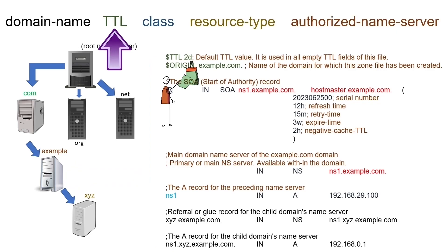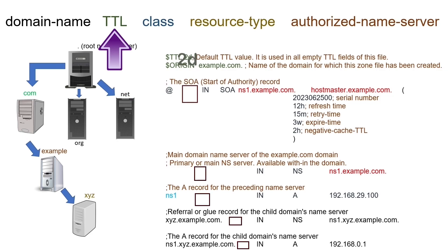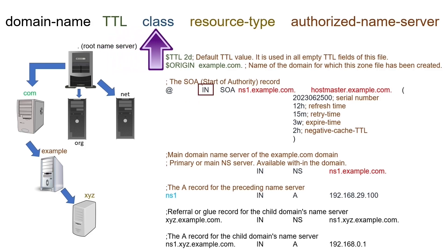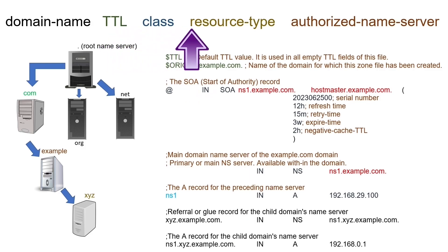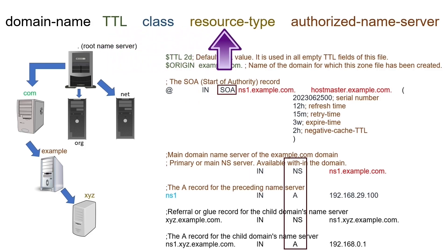One field defines the maximum time resolver systems can cache this record. If we leave this field blank, DNS uses the default value of the TTL directive. Another field defines the class type, and another field defines the record type.